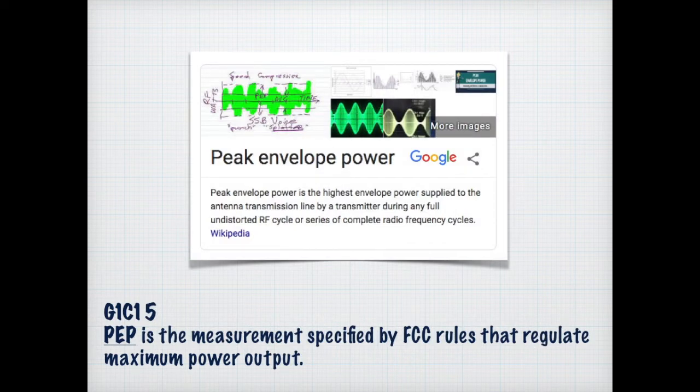So what is peak envelope power, or PEP? It's basically a measurement specified by the FCC rules that regulates the maximum power. If you can see in the diagram — the waveform — it looks like an envelope. Everything contained within that envelope represents the power.